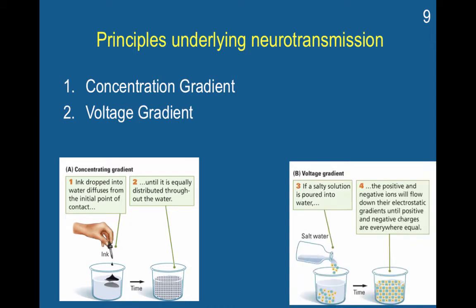The next principle is a voltage gradient. A voltage gradient follows relatively the same principles, but instead of something like ink and basic concentration, it looks at how things that have a voltage become distributed across water. If a salty solution is poured into water — containing potassium, sodium, and chloride — the positive and negative ions will flow down their electrostatic gradients until positive and negative charges are equal everywhere.